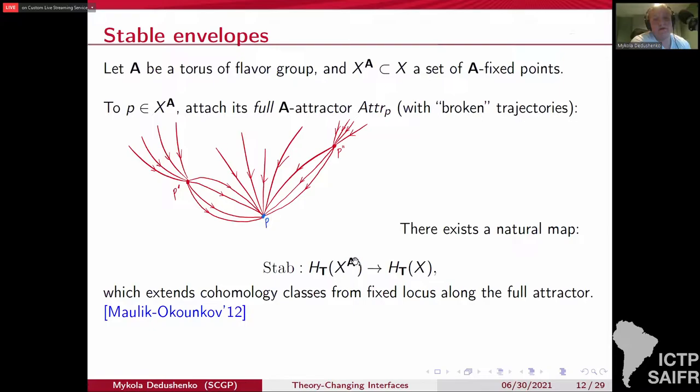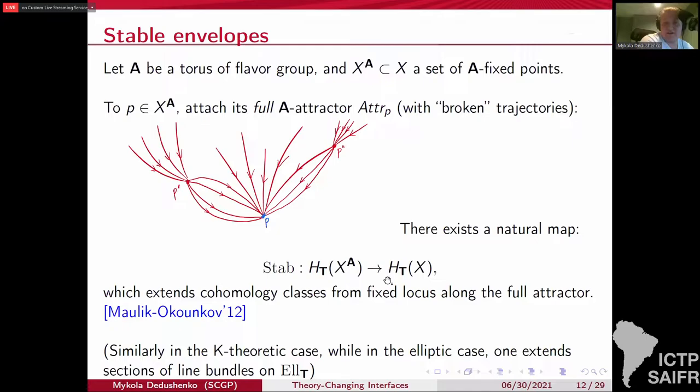If some of them also start at some other fixed critical point P prime, you can also consider all trajectories that end at P prime and so on. And this whole beast is usually referred to as the full attractor of P. Now, it turns out that there is a natural way to extend cohomology, equivariant cohomology classes from the fixed locus to the entire X. And in such a way that you start with a cohomology class near fixed point and you extend it along the full attractor. And that's the idea behind the stable envelopes.